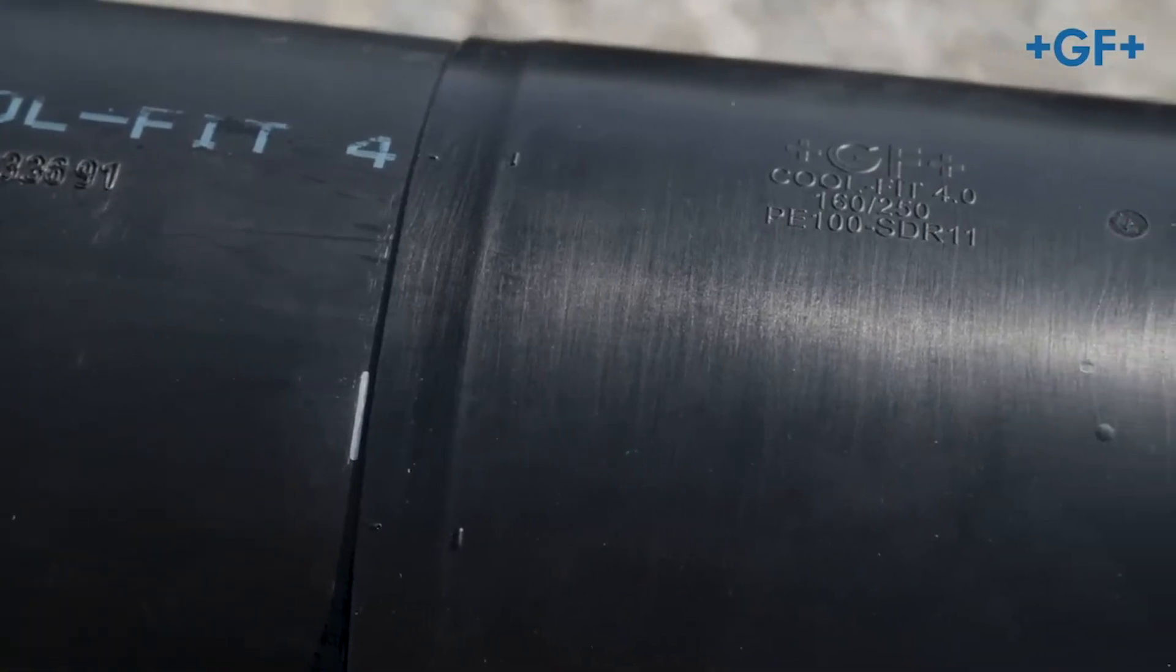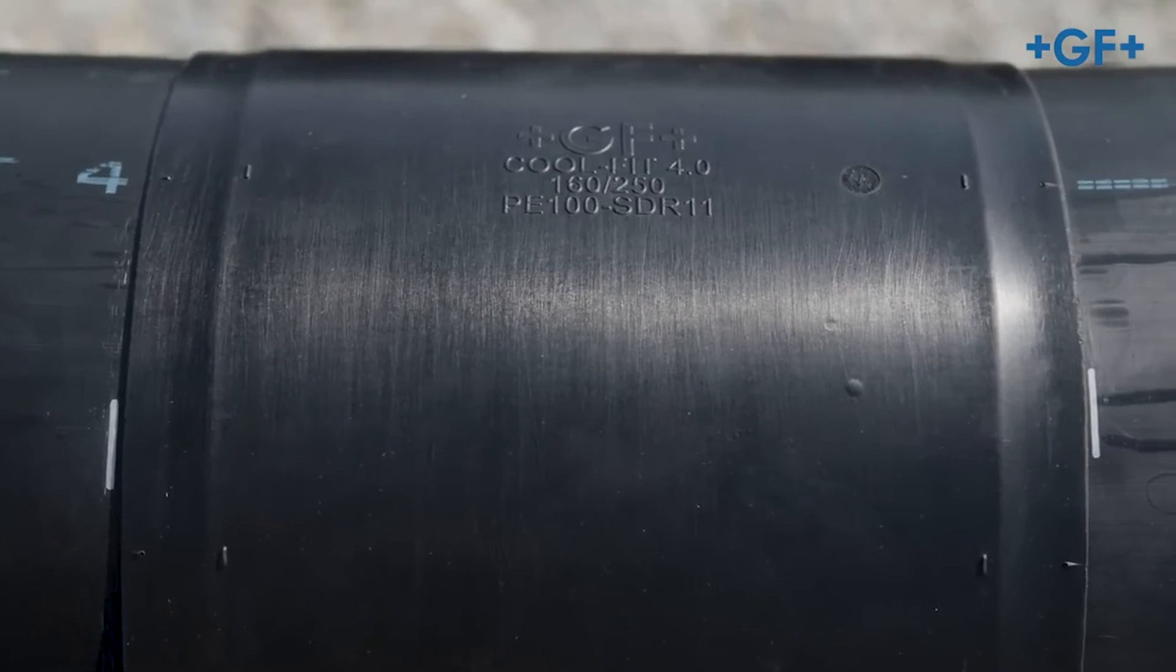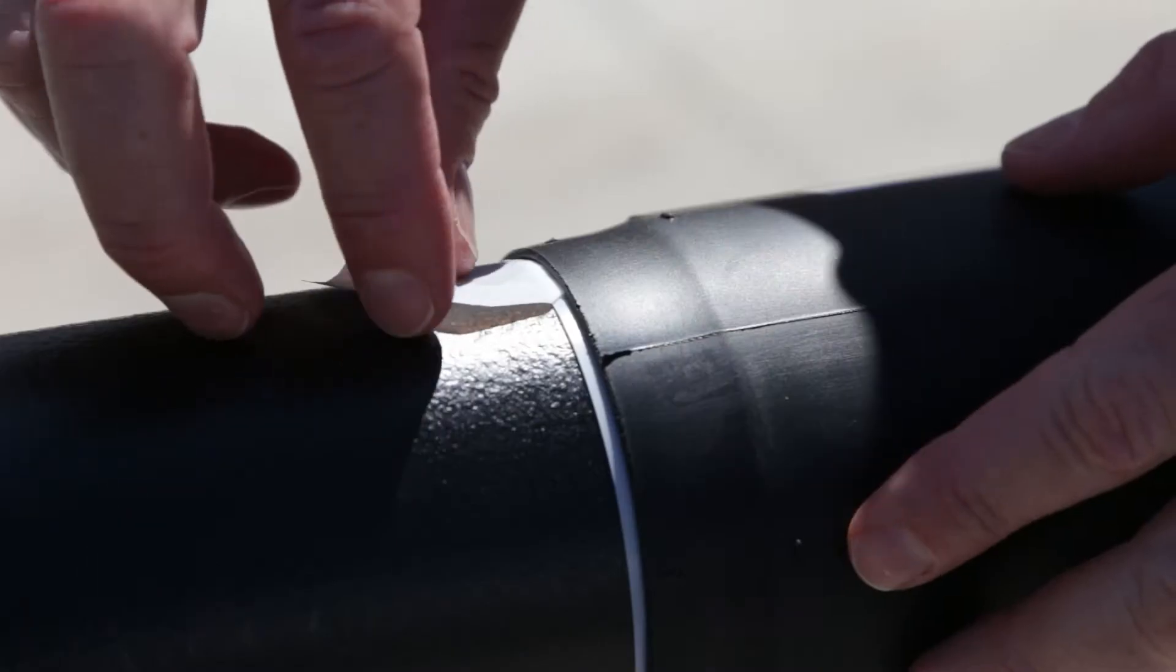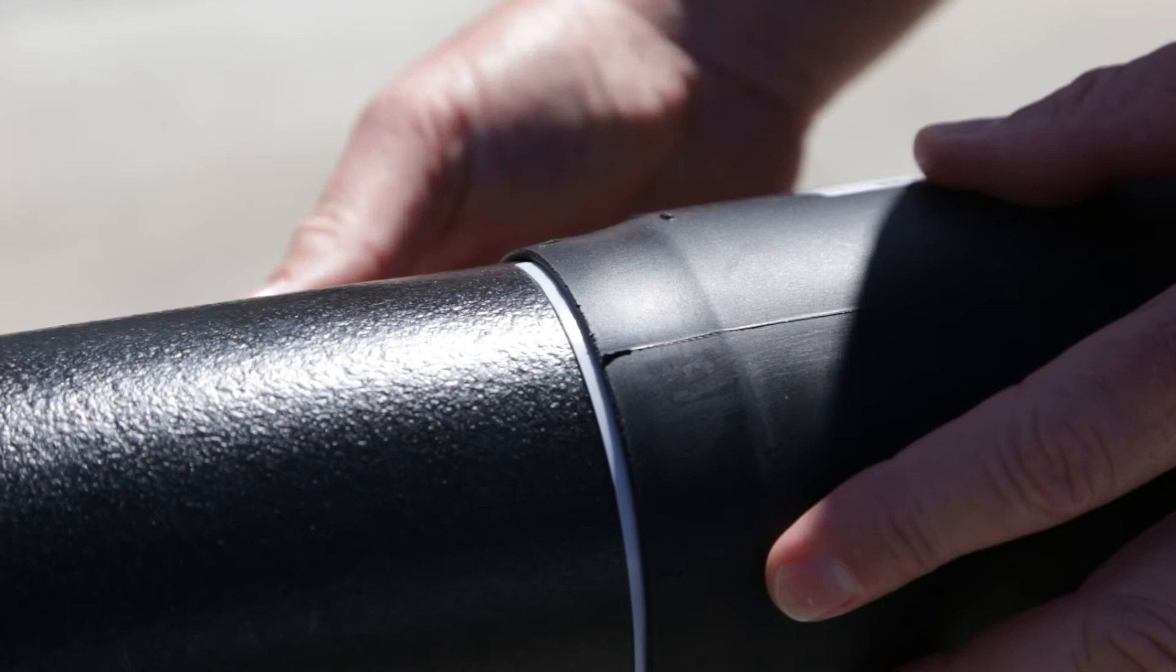Check the insertion depth of the pipe and fitting by means of the marking. Pull off the liner after removal of assembly aids.